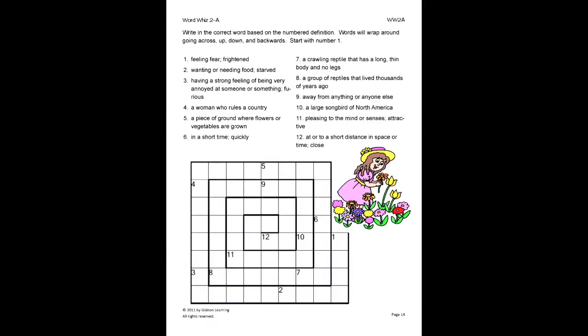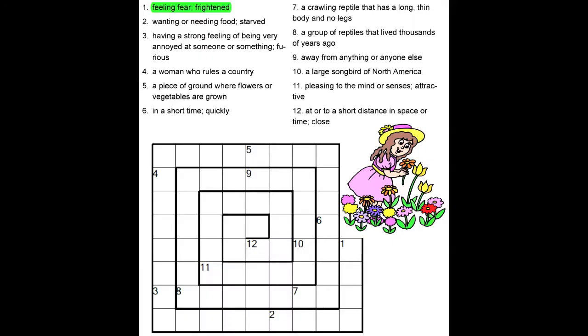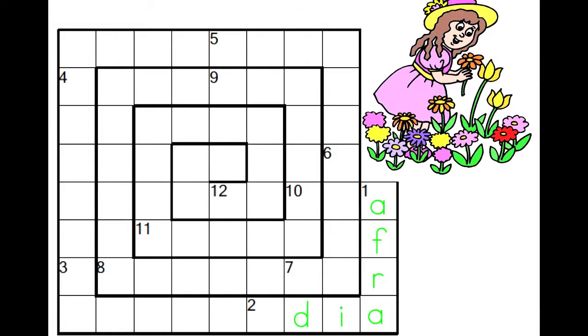On this exercise, the student will write the correct word based on the number definition. Words will wrap around going across, up, down, and backward. Start with number one. First, read the given definition, feeling fear or frightened. We know this is the definition for afraid, so we neatly write each letter in its correct box starting with number one.